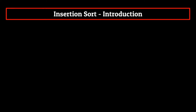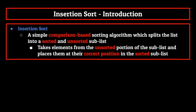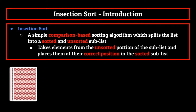We can define insertion sort as a simple comparison-based sorting algorithm, which splits the list into a sorted and unsorted sub-list. We then take elements from the unsorted portion of the list and place them at their correct position in the sorted portion. Oftentimes when computer scientists talk about insertion sort, they will use the example of sorting a deck of cards. You start with a completely unsorted deck, and then slowly position the cards at their correct position.